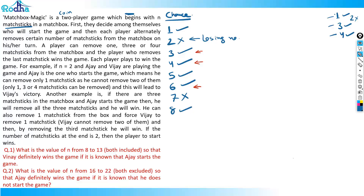We're trying to find a pattern for initial numbers, since the questions involve numbers around eight to thirteen and up to sixteen. At nine coins, it's a losing number — the nearest losing number I want to give you is seven, but I can't pick two coins. So I end up handing a winning number to you. At ten coins I win — I pick one and hand over nine to you.